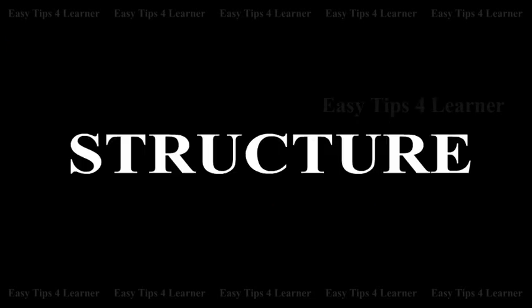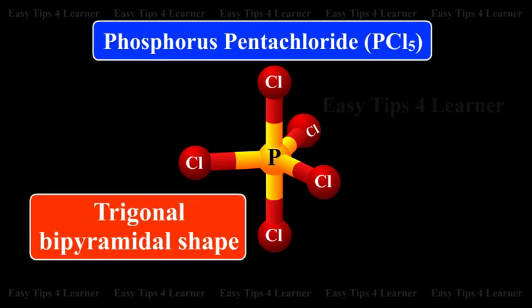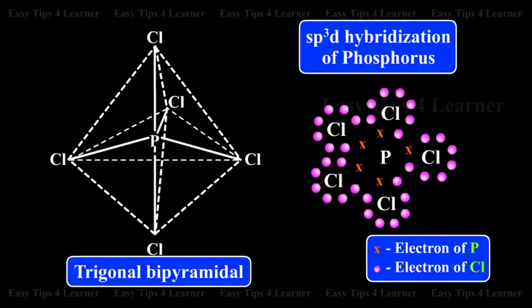Structure. Phosphorus pentachloride molecule has a trigonal bipyramidal shape in the vapor state, which arises from sp3d hybridization of the phosphorus atom.